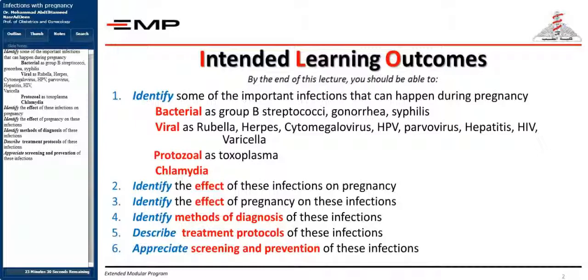Bacterial infections include Group B Streptococci, Gonorrhea, and Syphilis. Viral infections include Rubella, Herpes, Cytomegalovirus, HPV, Parvovirus, Hepatitis, HIV, and Varicella. Protozoan infections include Toxoplasma, and also Chlamydia.